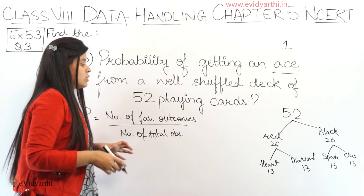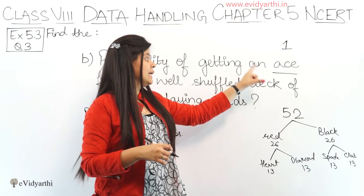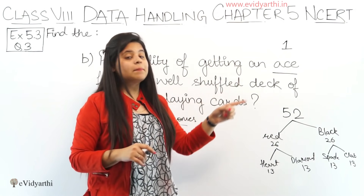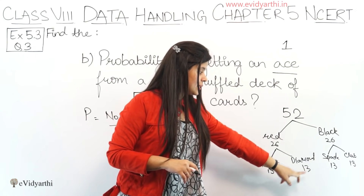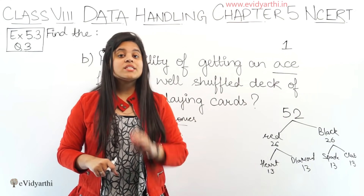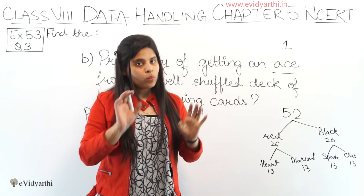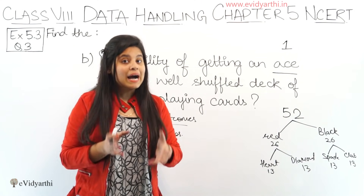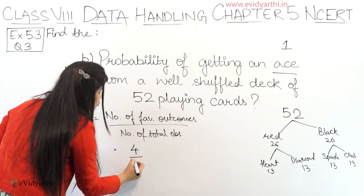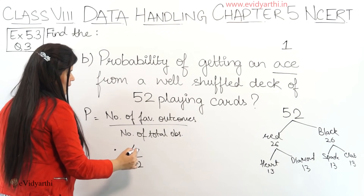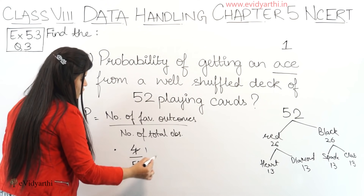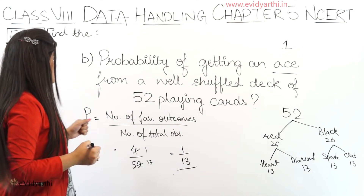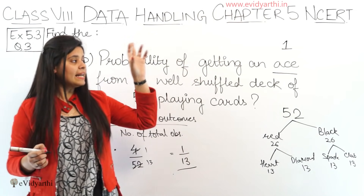So now here, the number of favourable outcomes: there are 4 aces in the deck — one for each suit. So favourable outcomes = 4, and total observations = 52. Simplifying 4/52: dividing both by 4 gives 1/13. So this will be equal to 1 upon 13. This means 1 upon 13 is the probability of getting an ace.